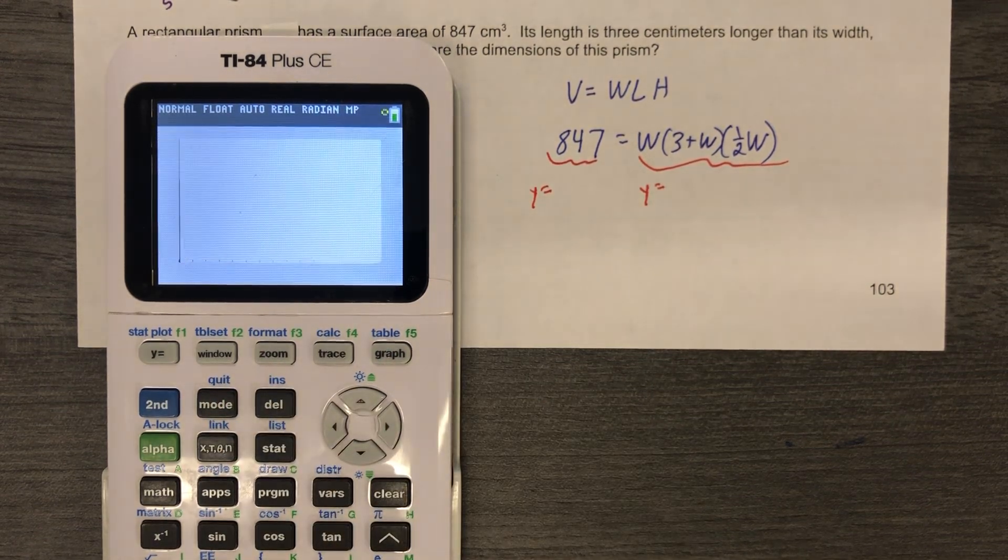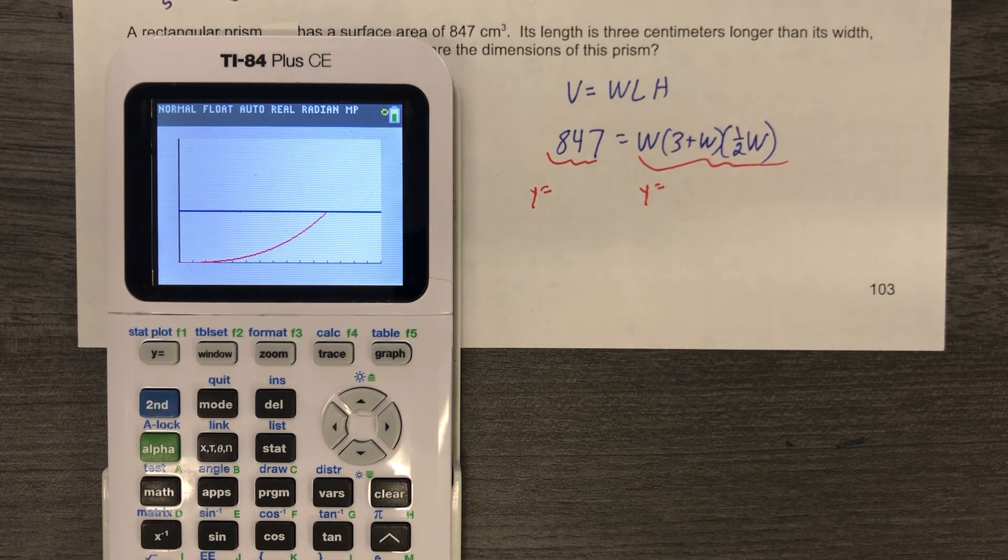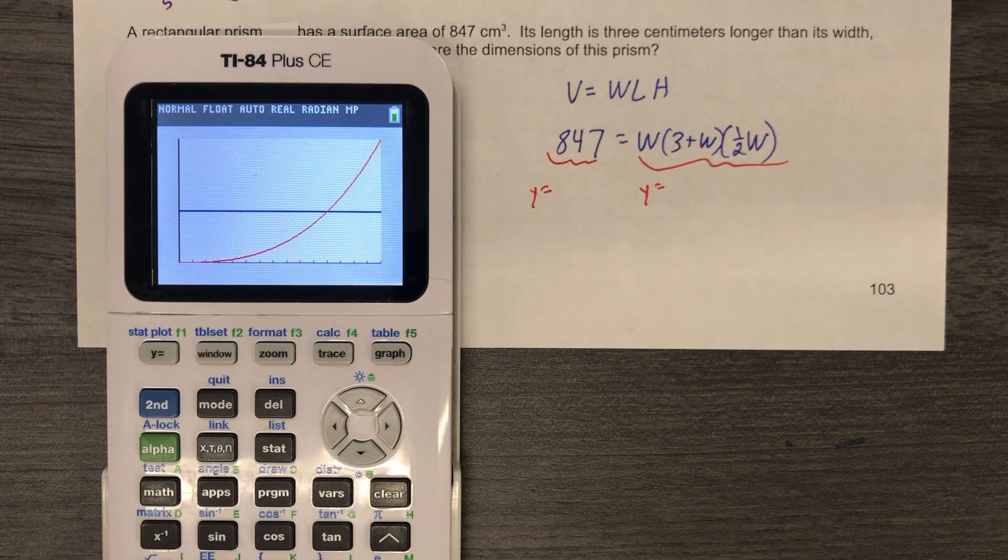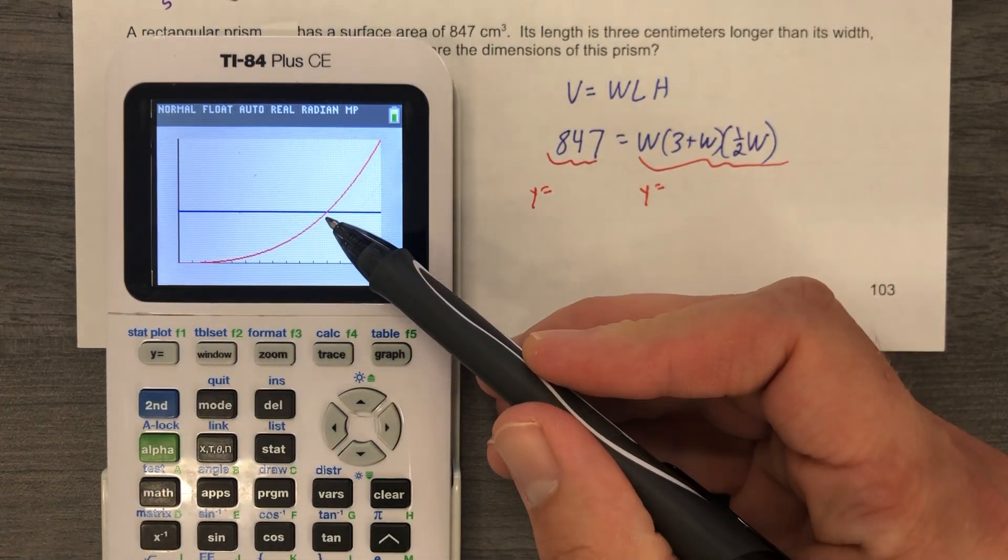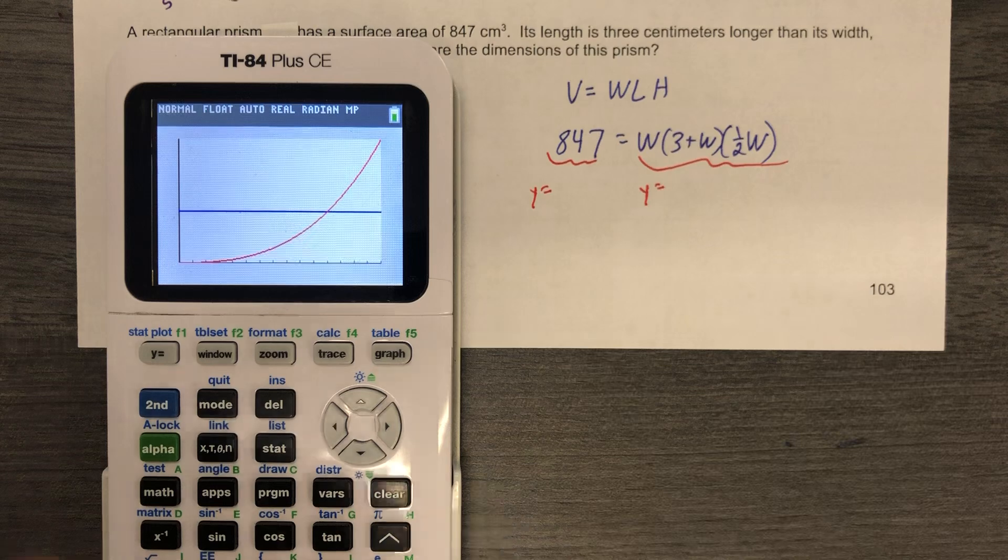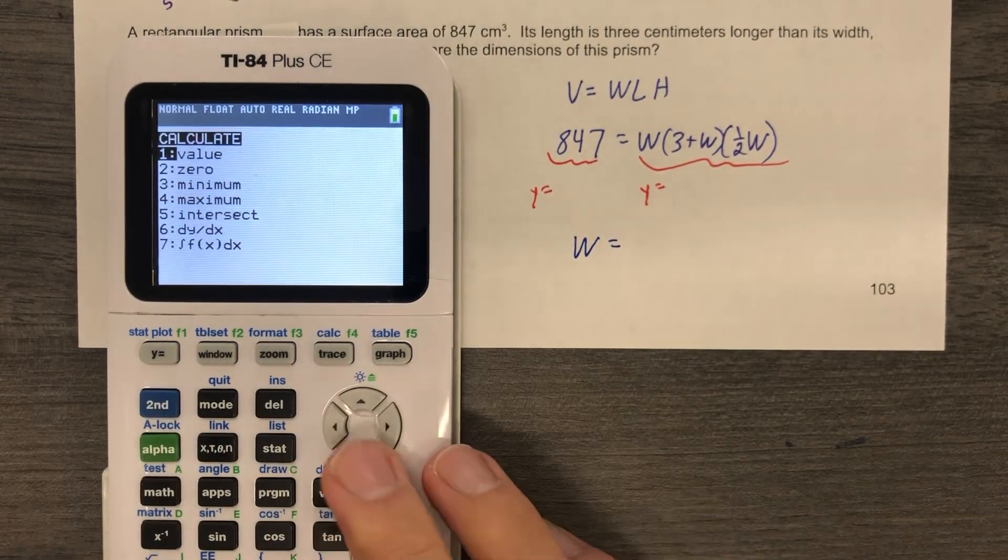You don't have to know those steps on the calculator. And there's 847. There's my cubic function that doesn't look as cubic right now, given the window. But what I do know is that they meet right there. Now, I don't know where that is. You can click on yours and find yours probably pretty easily. But mine is going to take a little bit more work.